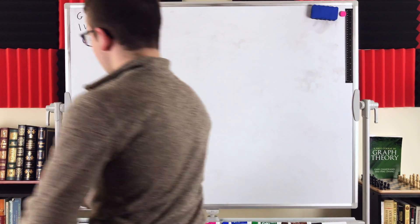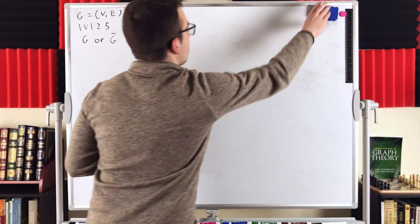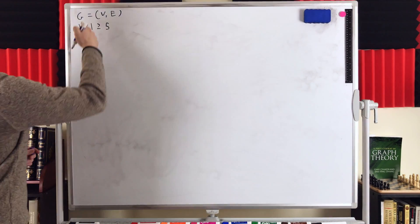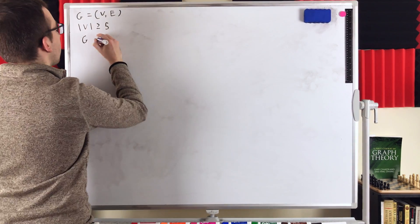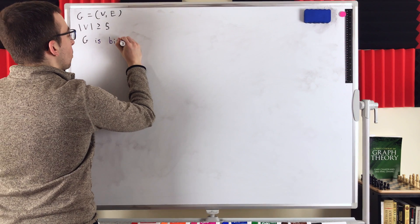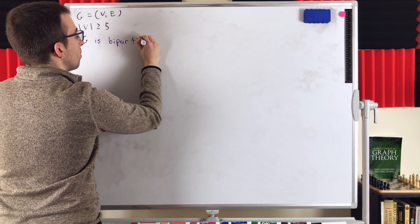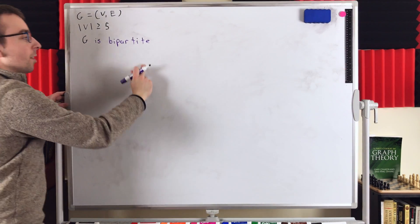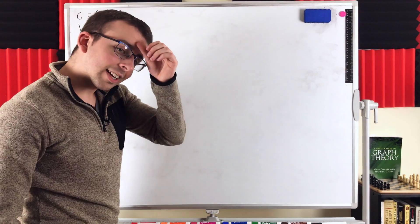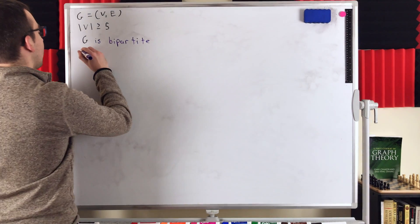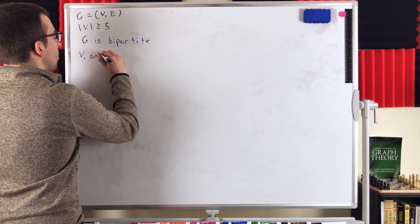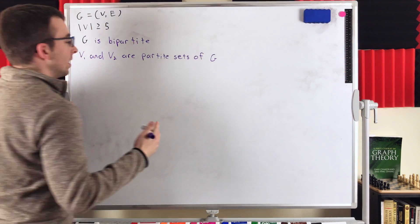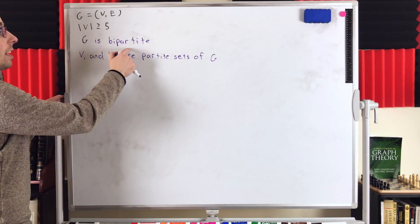Let's jump into the proof. We've got a graph G with at least five vertices, and we're assuming that G is bipartite — we're going to show that the complement cannot be bipartite. Since G is bipartite, it has two partite sets V1 and V2. We know that these partite sets exist because G is bipartite, so no pair of vertices in V1 is adjacent in G, and no pair of vertices in V2 is adjacent in G.